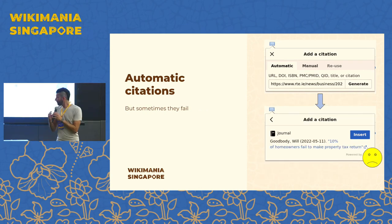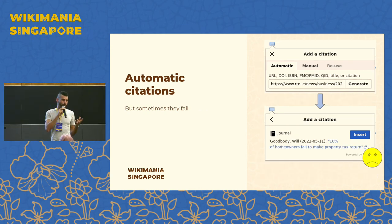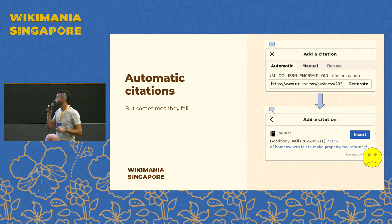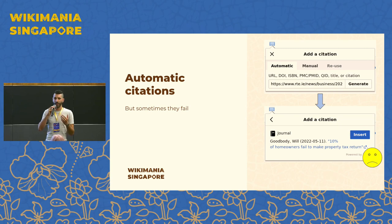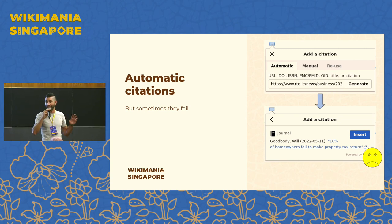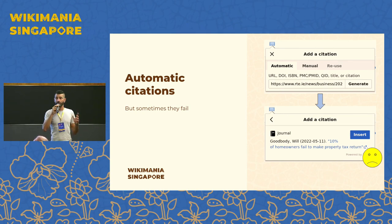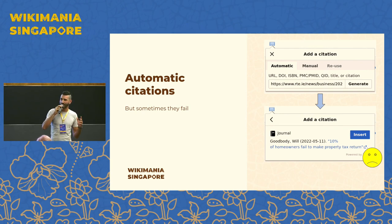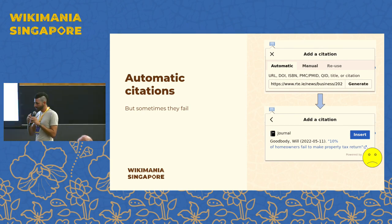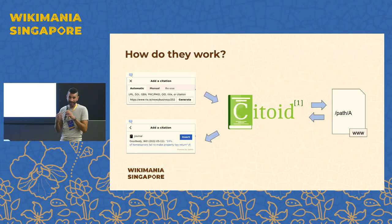The problem is that this doesn't always work as expected. Most commonly, the item type is misidentified — for example, we are citing a newspaper article but it says it's just a web page. Or it misses the name of the author, or confuses the publication source with the author name, saying the author is 'The Times' when that's actually the publication source.